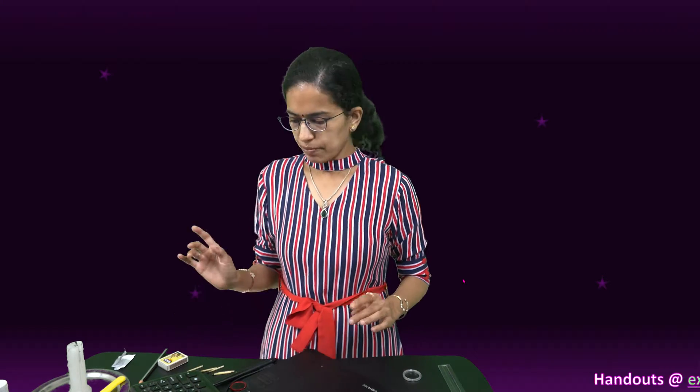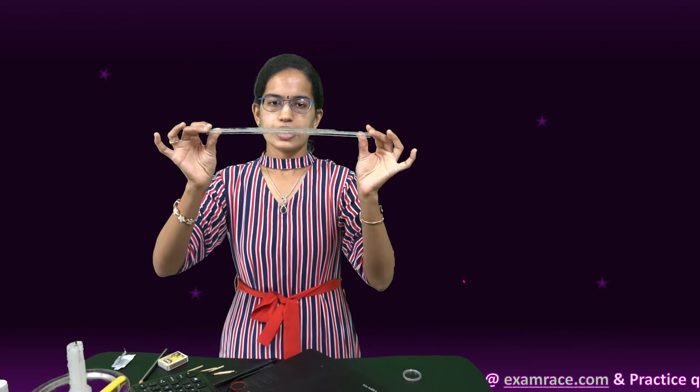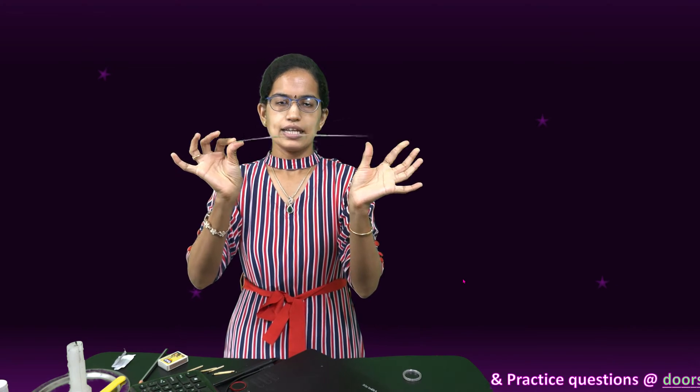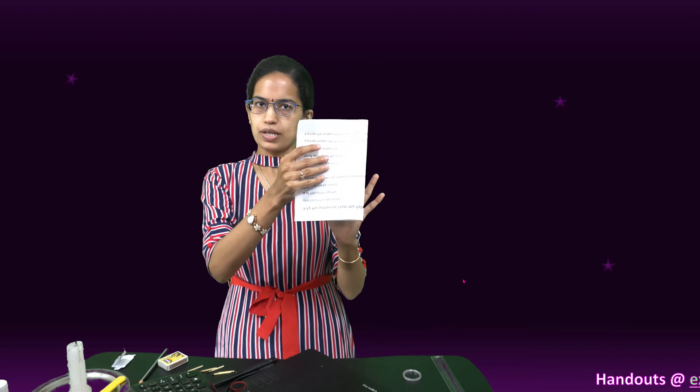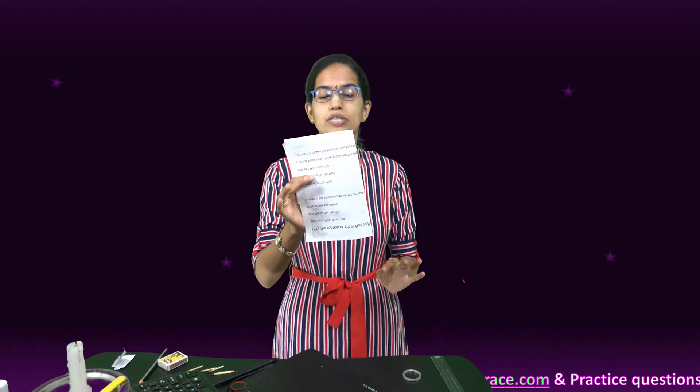Coming to the examples of physical change — I have a scale here. I bend this scale and this scale regains its shape. So there is a change in shape and this shape turns back. Definitely a physical change. Another example: I have a paper here and I fold this paper. This is a physical change and also a reversible change because I can unfold this paper again.